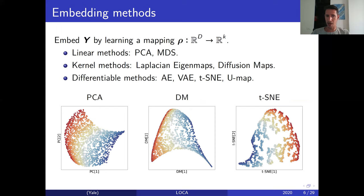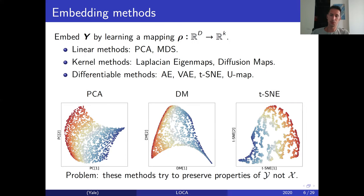Here I'm demonstrating the application of three of those methods on the example from the previous slides. You can see that reducing the patch from three dimensions to two dimensions still maintains some of the structure, but it's not perfectly recovering the structure of x, which was a square. All the methods have different deformations — they recover a slightly different structure because they all try to preserve properties of y and not properties of x, and so they cannot achieve our goal of perfectly recovering x.